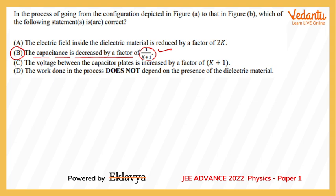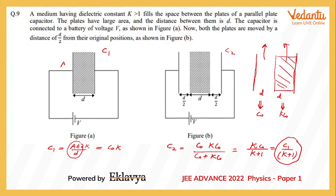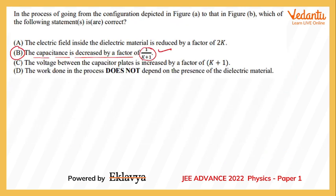It says that the voltage between the capacitor plates increased by a factor. Now here we have kept the battery connected with the plates of the capacitor, so this becomes the governing condition. It basically means that whatever happens, the potential difference between the plates of the capacitor never changes to any other value from V. It's going to remain as V, so that makes option C incorrect.